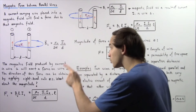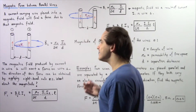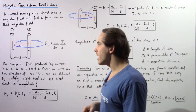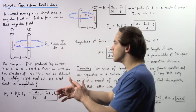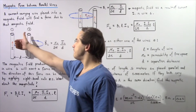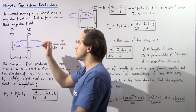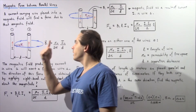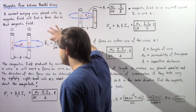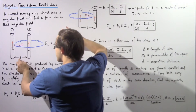The direction of B2 is given by right-hand rule number one. We wrap our hand around the wire so that our extended thumb points in the same direction as the electric current. The fingers curl in a counterclockwise direction, so the magnetic field B2 points counterclockwise. This field reaches wire one, which is at distance d from wire two.